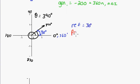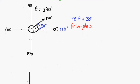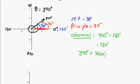The principal angle is the closest angle to the initial arm and always positive. Starting at the initial arm and rotating positive to the terminal arm, that's also 30 degrees. So the principal angle is 30 degrees — the same as the reference angle. For the coterminal angle, the general solution is 390 plus 360n, where n is an element of integers; for example, 390 plus 360 equals 750 degrees.